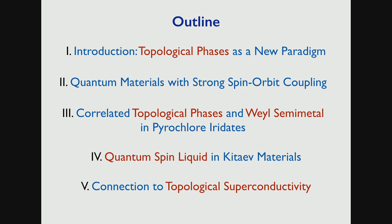I have two broad examples. The first is a material called the pyrochlore iridate, where theoretically we expect to see a number of interesting topological phases. Then I'll switch gear and talk about recent activities on quantum spin-orbit liquid in iridium materials, focusing mostly on theoretical ideas. Later in the week, Professor Hideo Takagi will give a broader perspective on quantum spin-orbit phases. If I have time, I'd like to make a connection to topological superconductivity.